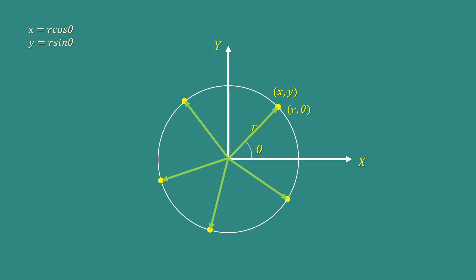Now, X equal to R cos theta and Y equal to R sin theta. Since the particle moves in a circular path, so for this dynamical system, number of constraints is 1. We can easily find the position or location of the point on this circular path if we know only the value of theta. Therefore, generalized coordinate will be theta.